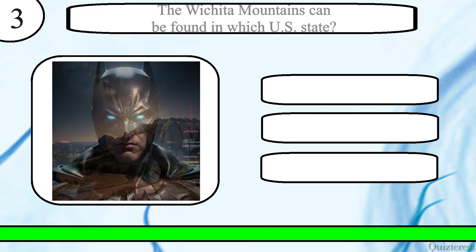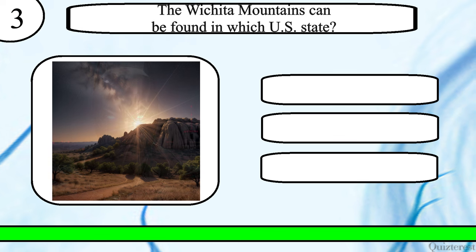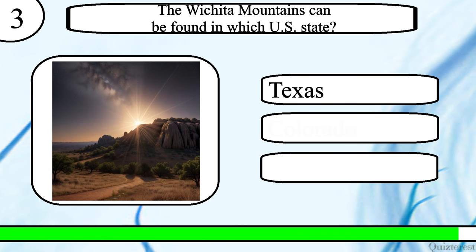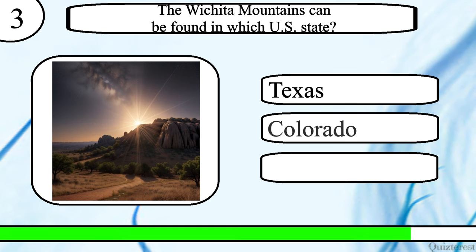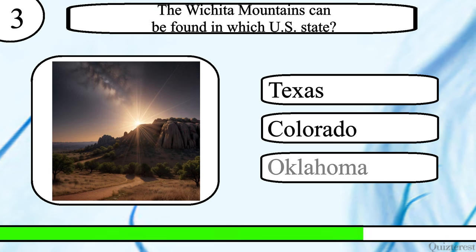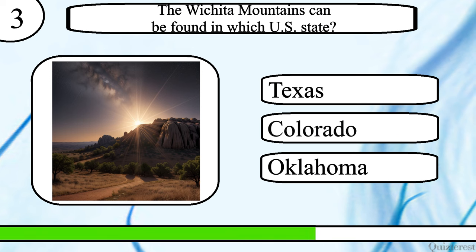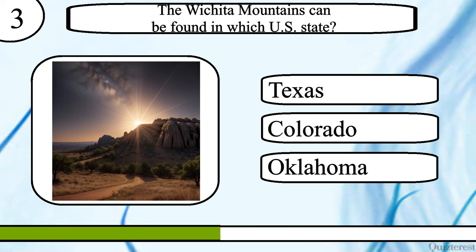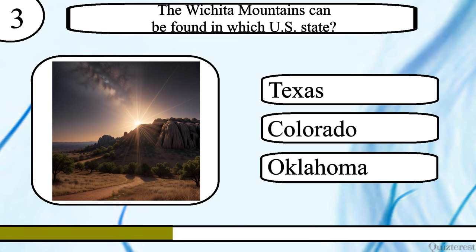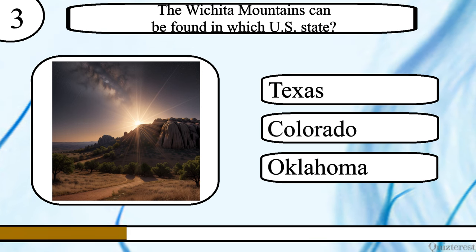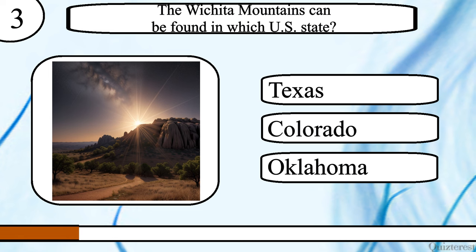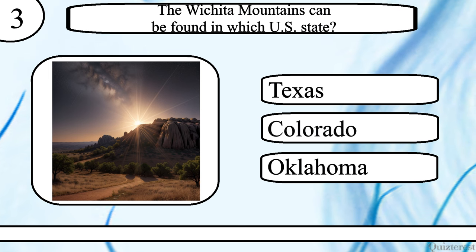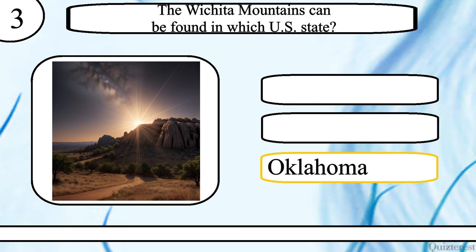Question 3. The Wichita Mountains can be found in which U.S. state? Texas, Colorado, or Oklahoma? The correct answer is Oklahoma.